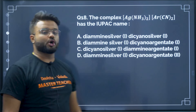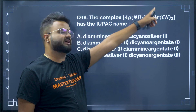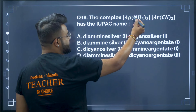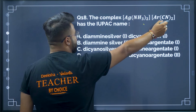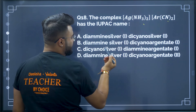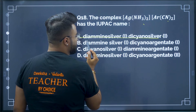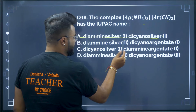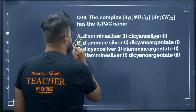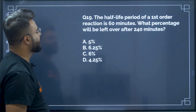Question 18: The complex [Ag(NH₃)₂][Ag(CN)₂] — its IUPAC name is diamine silver(I) dicyanoargentate(I). Therefore option B is your correct answer.